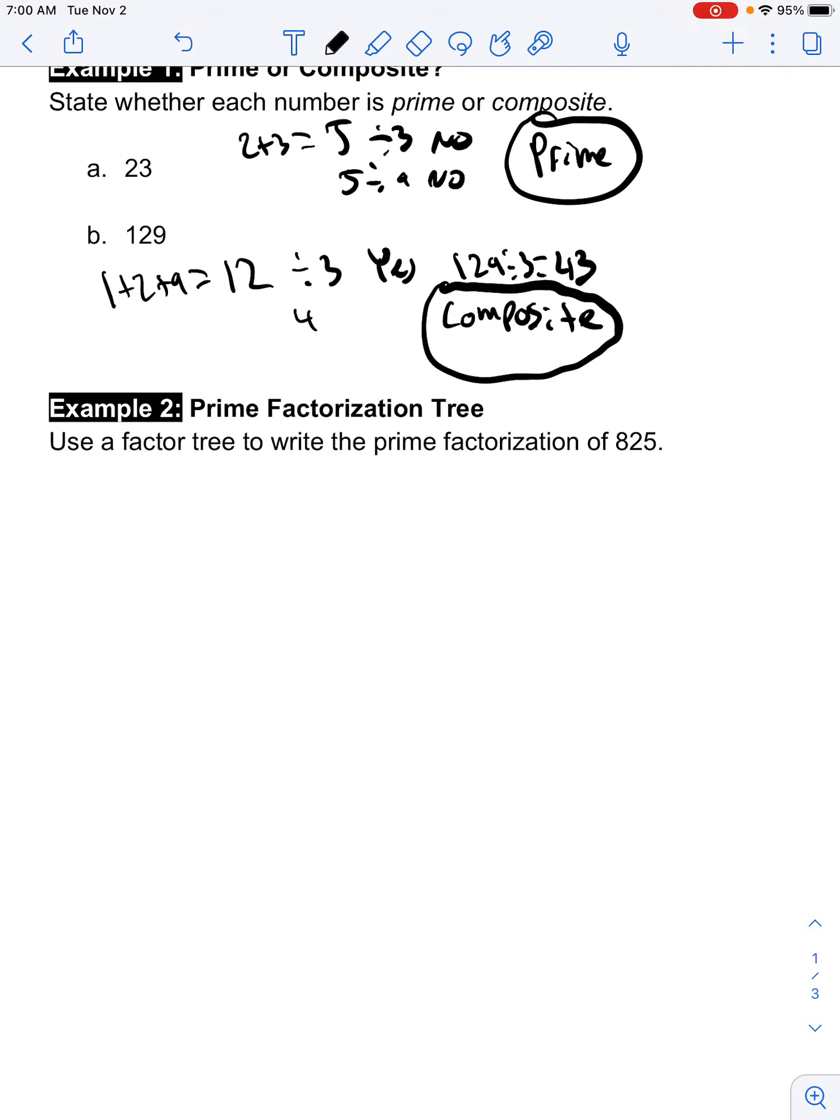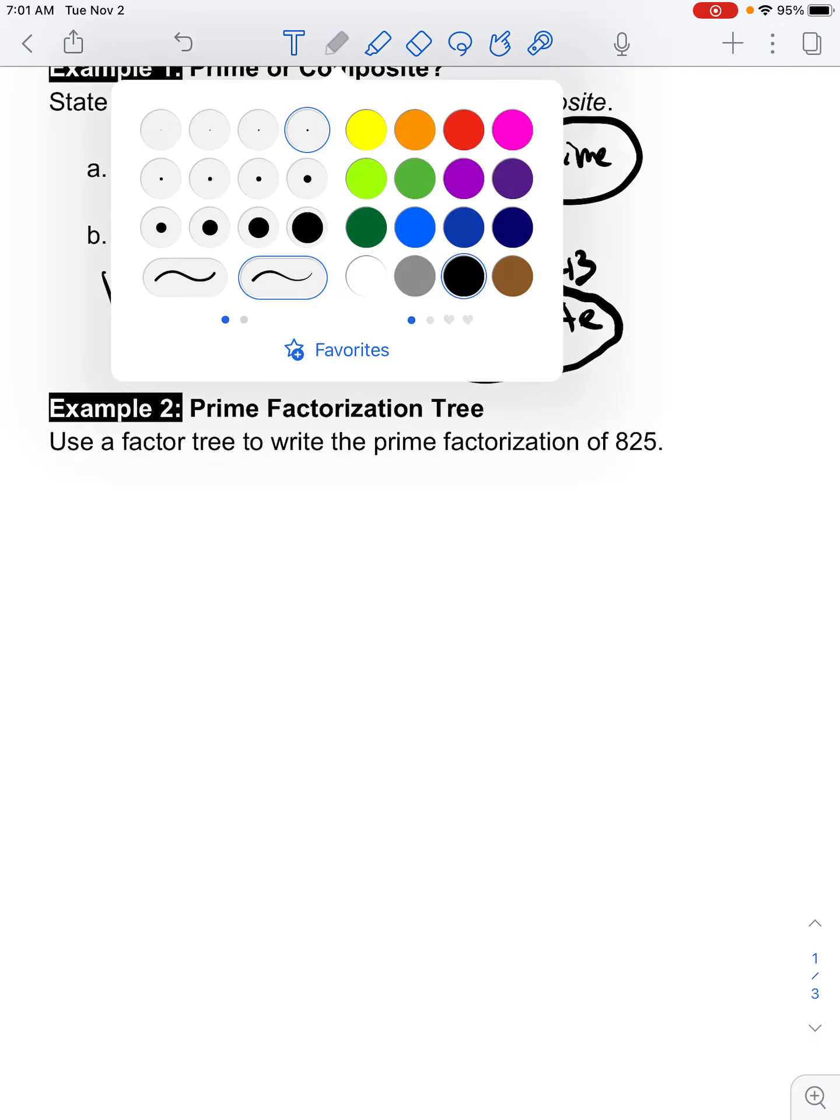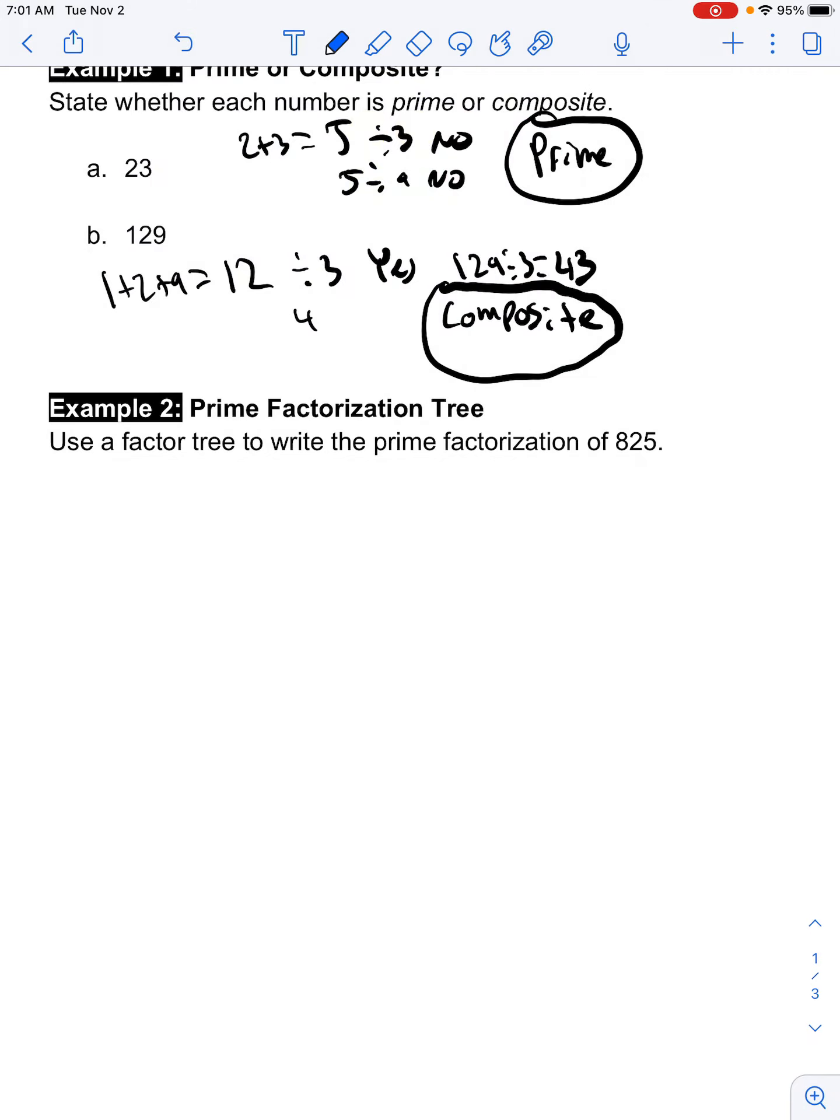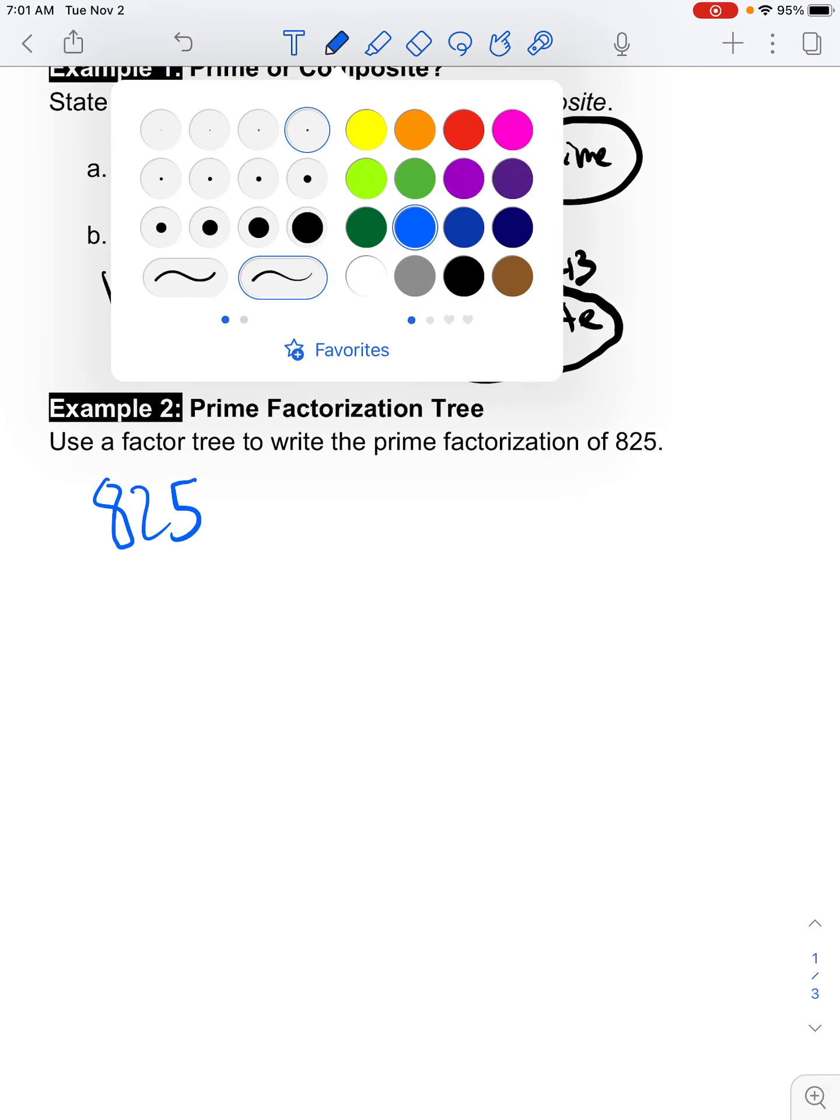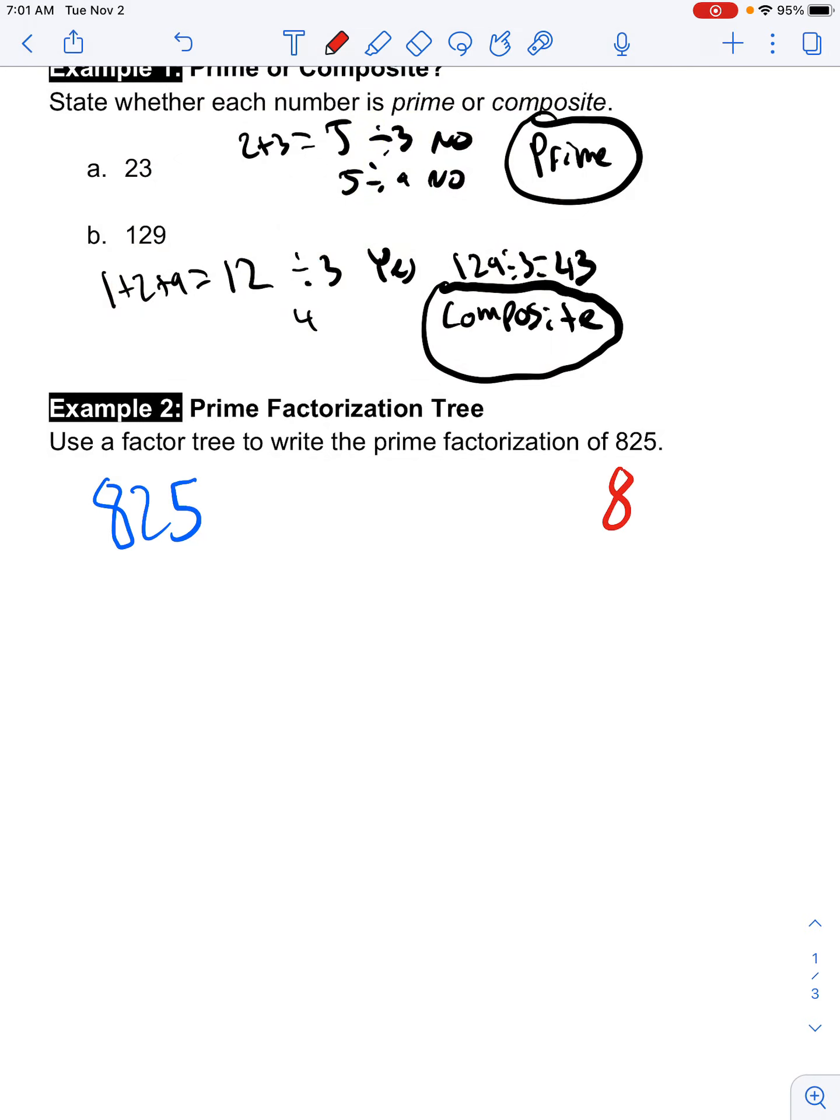All right. Prime factorization trees. So, I am going to do this two different ways to just show you there's more than one way to do a prime factor tree. And I think you'll see that in this example. So, let's do 825 right here. And then we'll do 825 in a different color over here. And you'll see me do it two different ways.